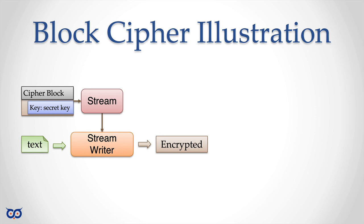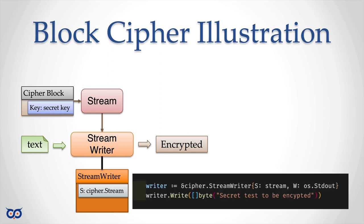A StreamWriter is an object that implements io.Writer and wraps an io.Writer. It wraps an io.Writer so you can say: here's the stream I want to use, and here's 'w' — where do I write the output to? When you call Write on the StreamWriter, it knows where to get the stream of bytes to XOR with the text you give it, and writes the result to whatever writer you initialized it with.